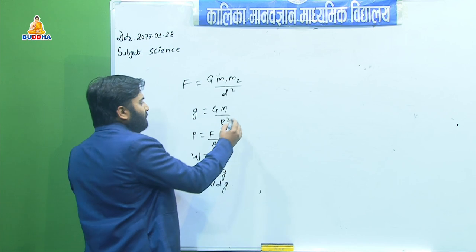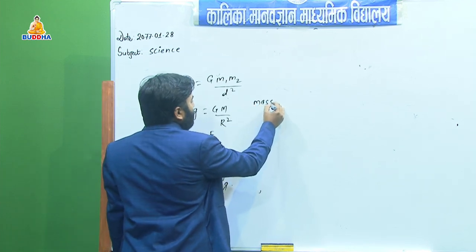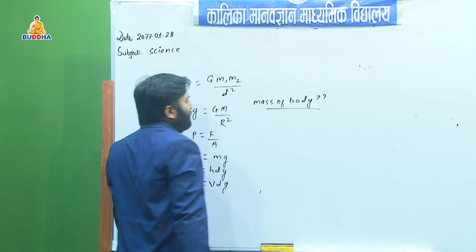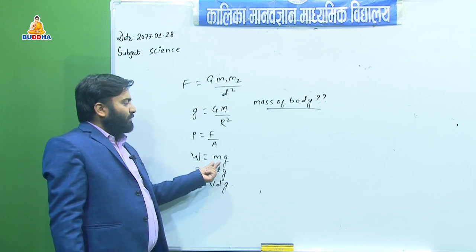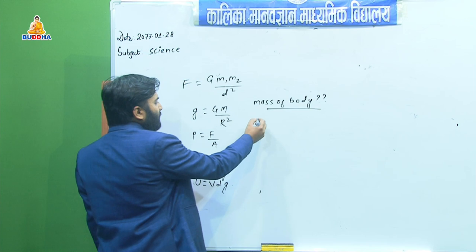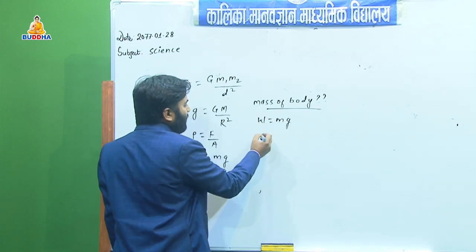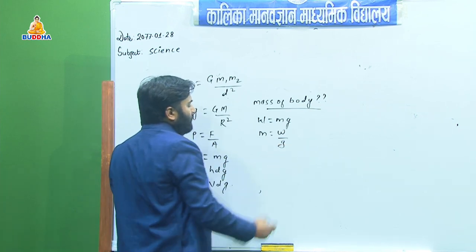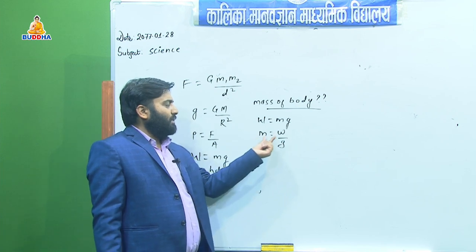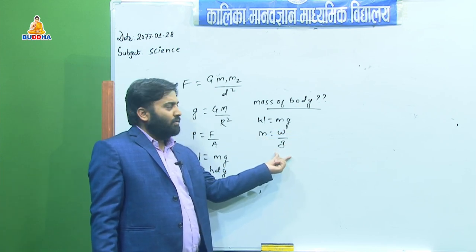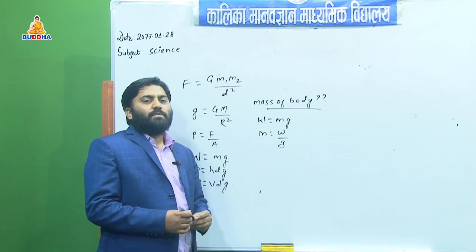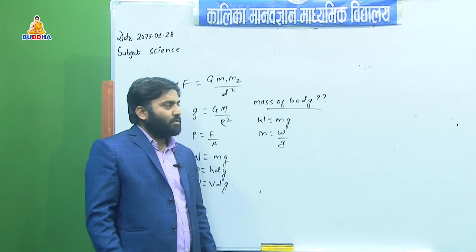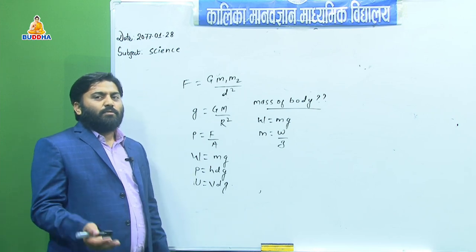The mass of the body depends upon the number of atoms or molecules and the mass of each atom or molecule — not on weight and g. Sometimes students write M = W/g and conclude mass depends on weight and g, but that is incorrect. Mass of the body depends upon the number of atoms or molecules and their individual mass.